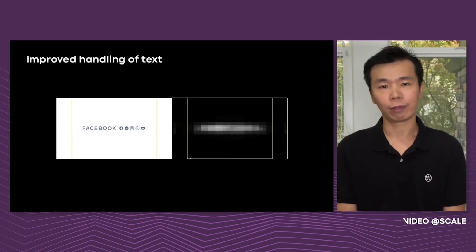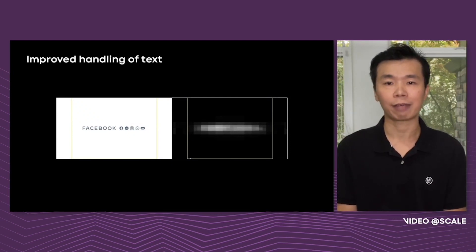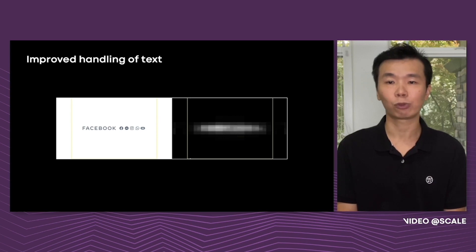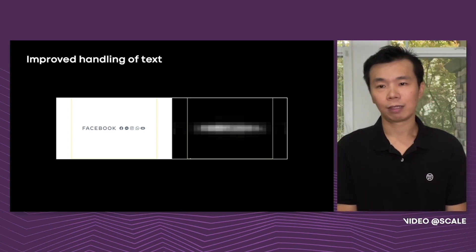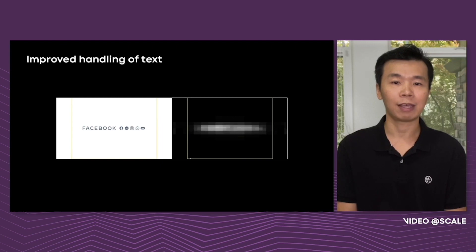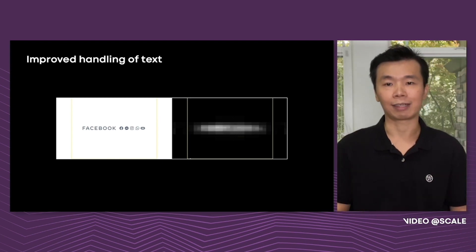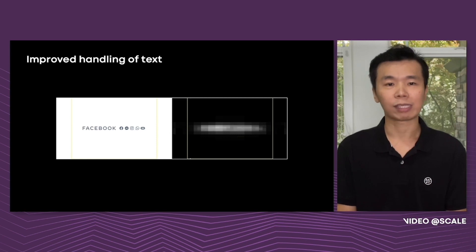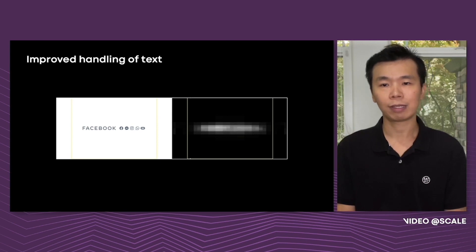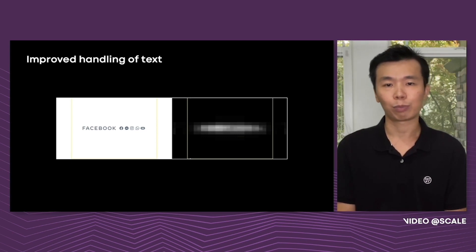We allow zooming out with letterboxing, as some videos have frame-wide text or other overlaid graphics. It is actually better to keep those text or graphics at the cost of having letterboxing. We use the saliency map to determine when to zoom out. Unfortunately, the saliency map sometimes does not have a high enough score across the entire text, resulting in text that is cropped, which looks unpleasant. To solve this problem, we use text detection technology. As shown in this example, text detection gives a strong response, which allows us to avoid dropping the text and provide a better user experience.